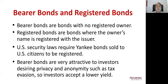We can also categorize bonds based on regulatory requirements. Bearer bonds are bonds with no registered owner — they are anonymous bonds. Registered bonds are bonds where the owner's name is registered with the issuer. Bearer bonds are attractive to investors because they offer privacy and anonymity, in most cases due to tax evasion, which is not a good intention and is harmful to the US tax system.